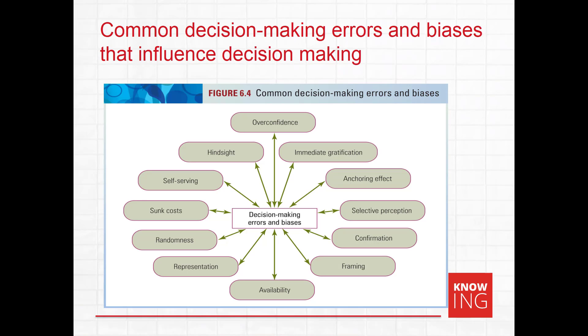Another problem is escalating commitment, which concerns what can occur when a decision has been made, proves to be a bad decision, and the manager refuses to accept that, instead putting more and more resources — money, time, effort, and people — into supporting the original decision. For example, if a manager decides to partner with an organisation believing it will increase customers, profit and reputation, but then the partnership doesn't bring new customers and is actually giving the company a bad name, escalating commitment would occur if the manager keeps giving the partnership more money, allocating more people, and refusing to acknowledge that it might be cheaper and more effective simply to end the partnership.